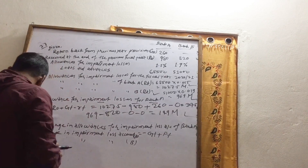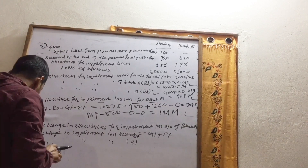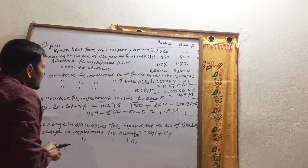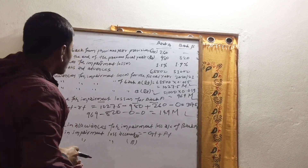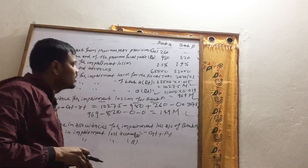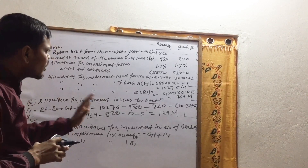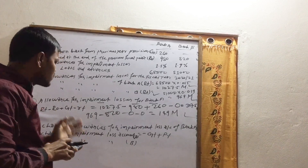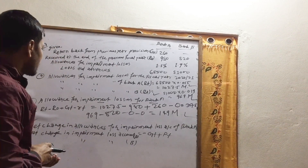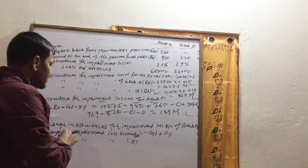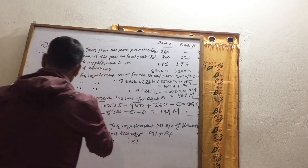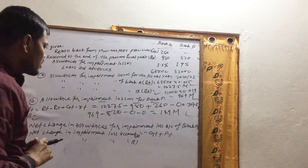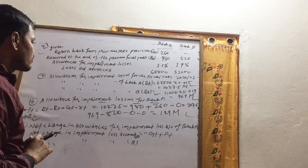What was the net change in the amount of the reserve for the losses of both banks for the previous fiscal year? Our requirement was 1,027.5 for the first bank and 969 for the second. We already have RO and GT. The formula for net change in allowances for impairment loss account of Bank A is shown.